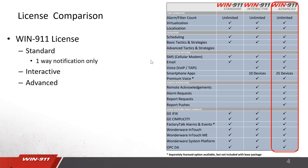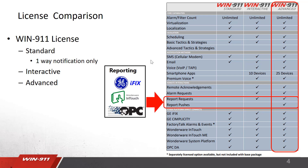Moving on to our advanced license — you have all the things available on the interactive, but now you have more smartphone apps. In addition, now you have report pushes available. With report pushes, you can send a report out to a person rather than having them only ask for the report. The key differentiator between the three levels is the advanced tactics and strategies — this feature is only available on the advanced license.